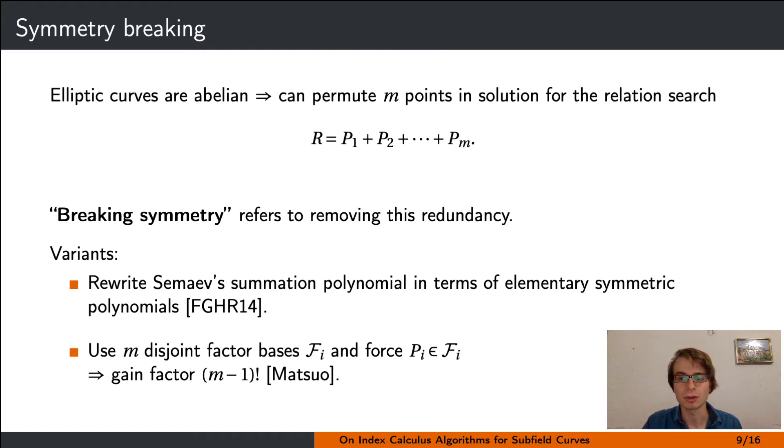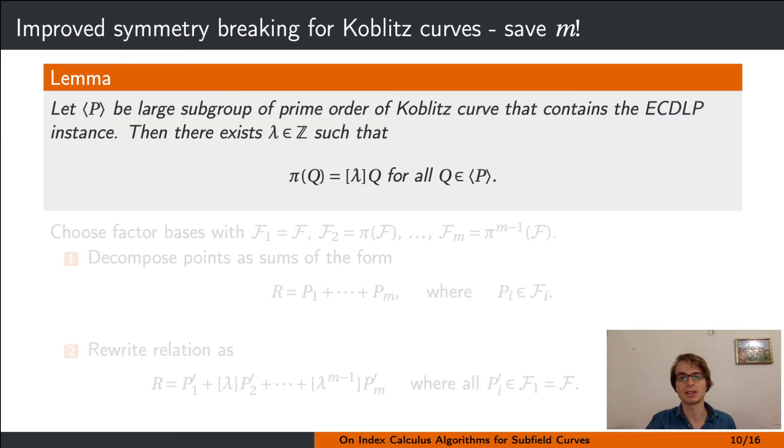However, for Koblitz curves we can do better, and we need the following lemma for it. First, recall that for curves used in cryptography, the ECDLP instance usually lies in a subgroup of the curve that is of prime order and roughly as large as the entire group of the curve itself. For Koblitz curves, one can then show that on this subgroup containing the discrete logarithm instance, the Frobenius endomorphism acts by multiplication of an eigenvalue, which by the way can be computed efficiently.